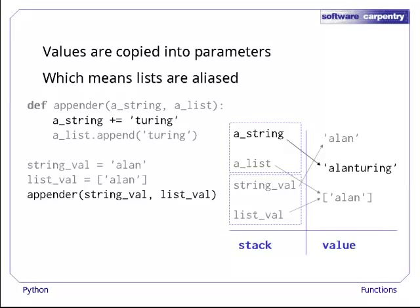The statement, a string plus equals Turing, creates a new string and overwrites the value of a string with a reference to it. The statement, alist.append Turing, however, actually modifies the list that a list is pointing at, which is the same thing that listVal in the caller is pointing at.